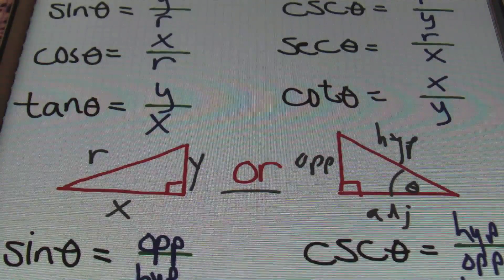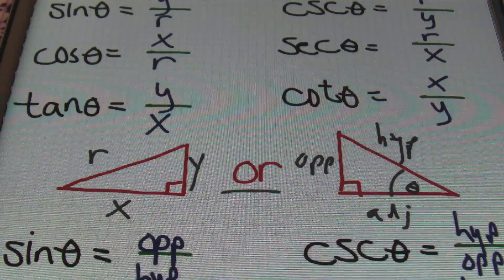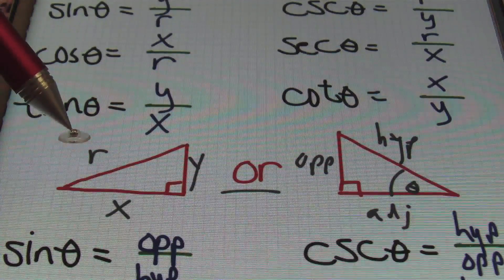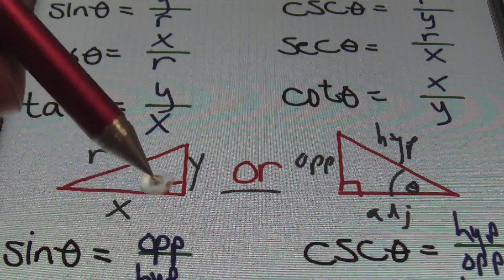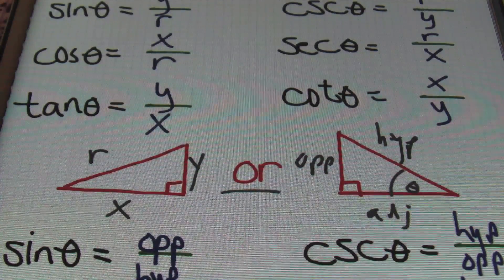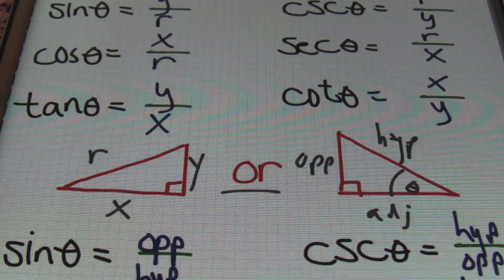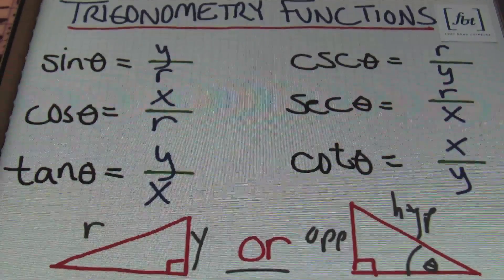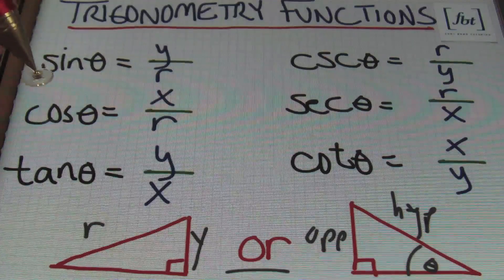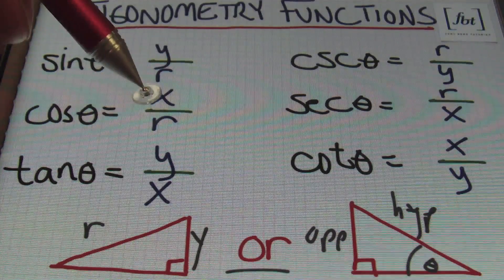One way is to understand that it's all about a ratio, a relationship between sides of a right triangle. For instance, you can learn that the hypotenuse is the value r, and that you have your x value and your y value as though it's on a Cartesian plane, a rectangular coordinate system. One method is to know that sine theta is the ratio of y over r, whereas cosine theta is equal to x over r.